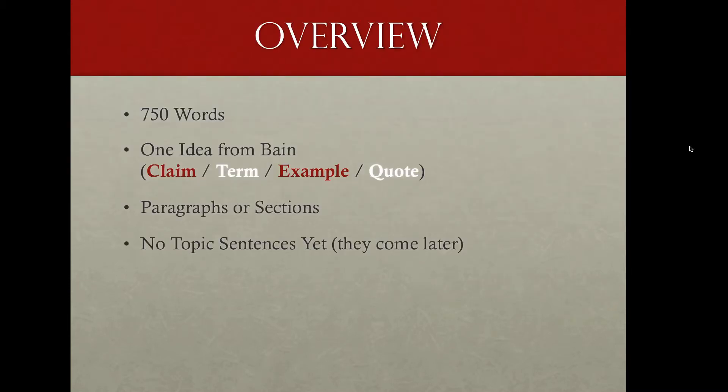Let's take a look at an overview of what we want to do in this first draft. We're shooting for about 750 words. Each paragraph or section in this draft should focus on one idea from Baines. So you pick a claim, a term, an example, or a quote, and you're going to build either a paragraph or a section around that one idea by explaining the idea, applying the idea, and evaluating the idea.